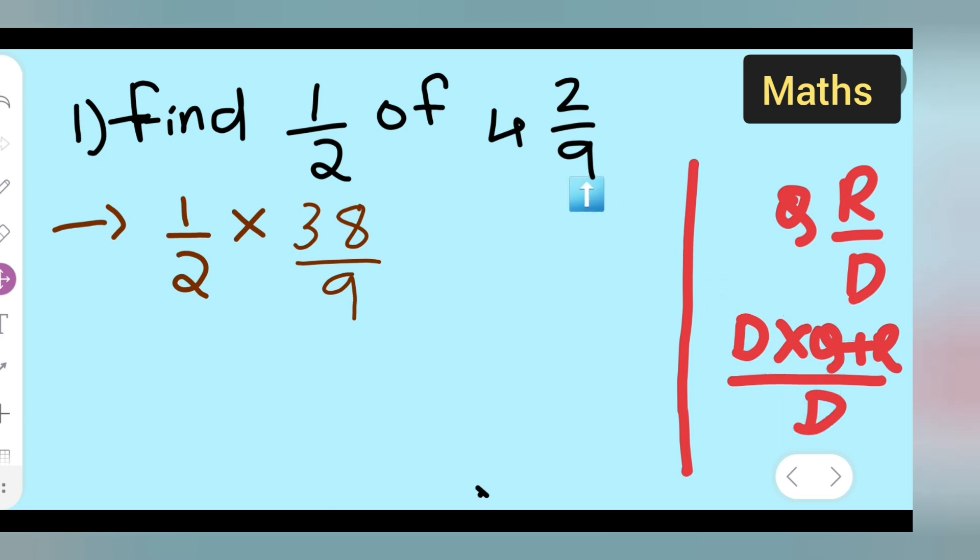Now, it is easy for you all to multiply but you all can cancel this if you all can. Basically, let me write down this. 38. 1 multiplied by 38. So, this is 1 multiplied by 38.